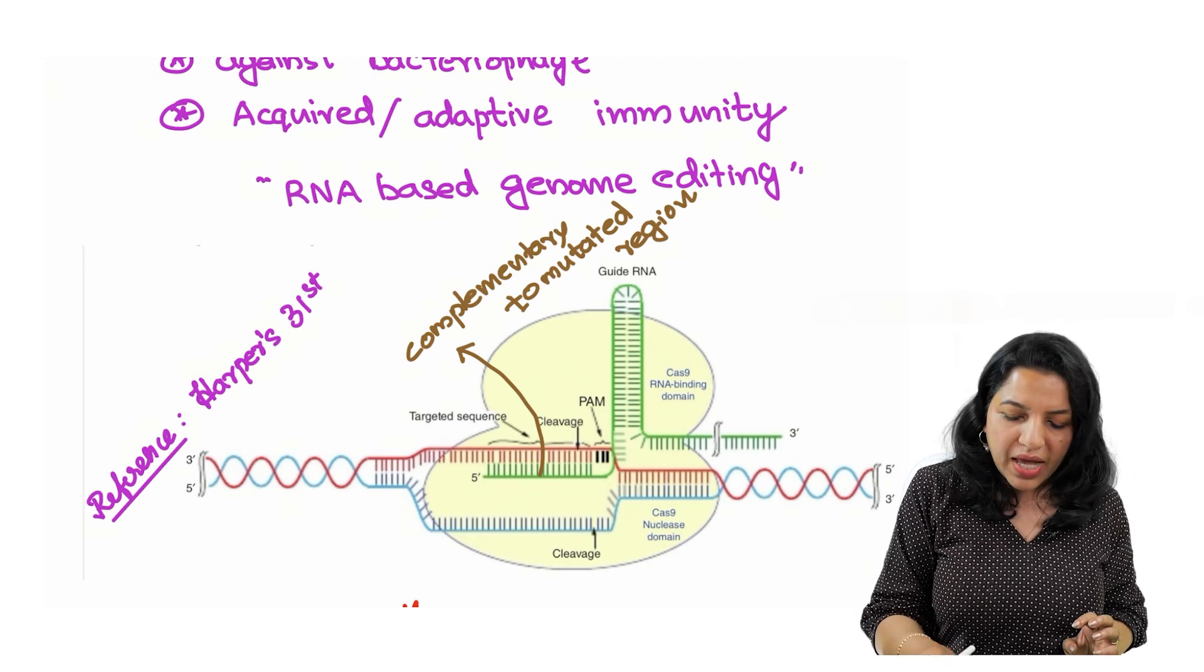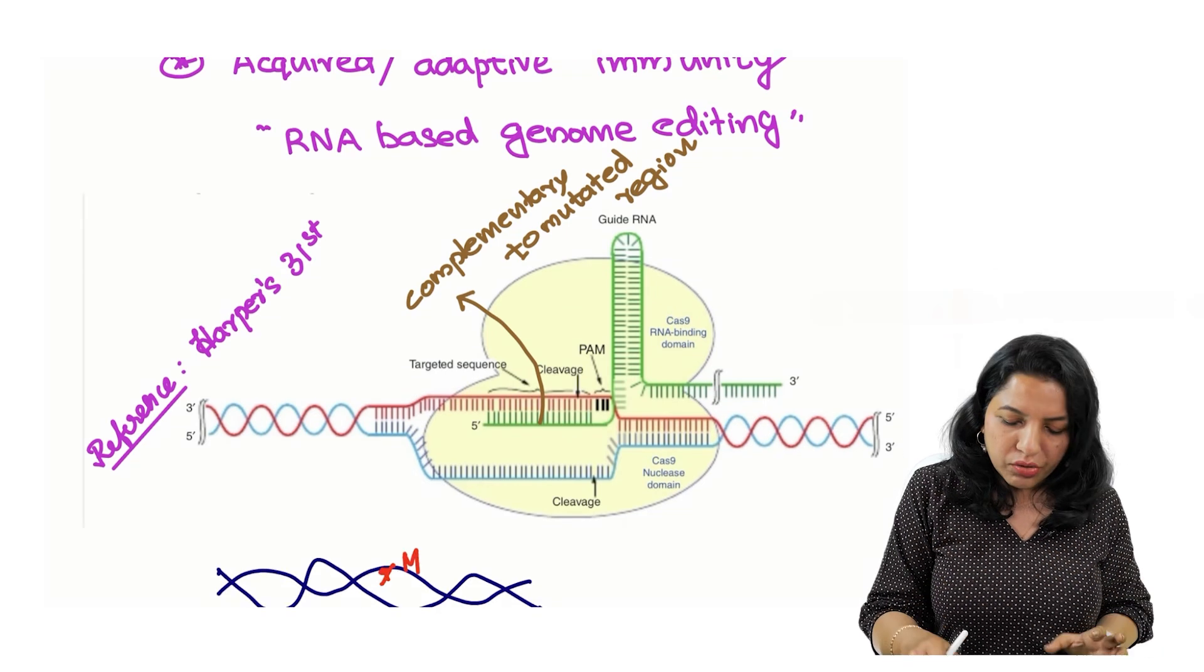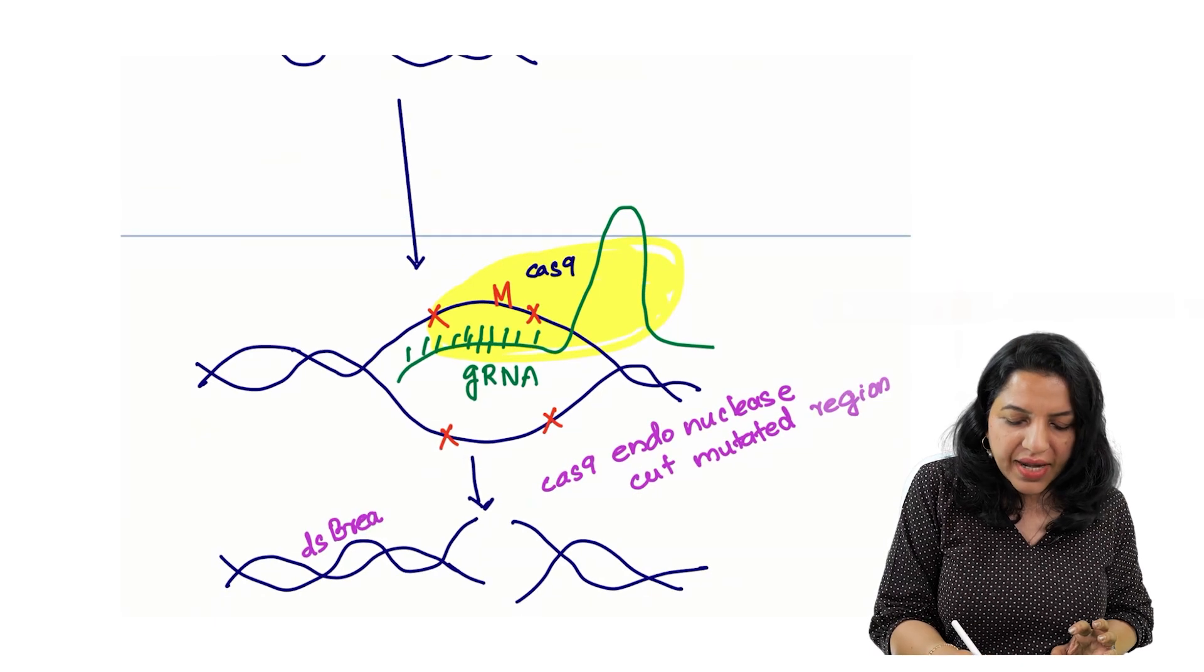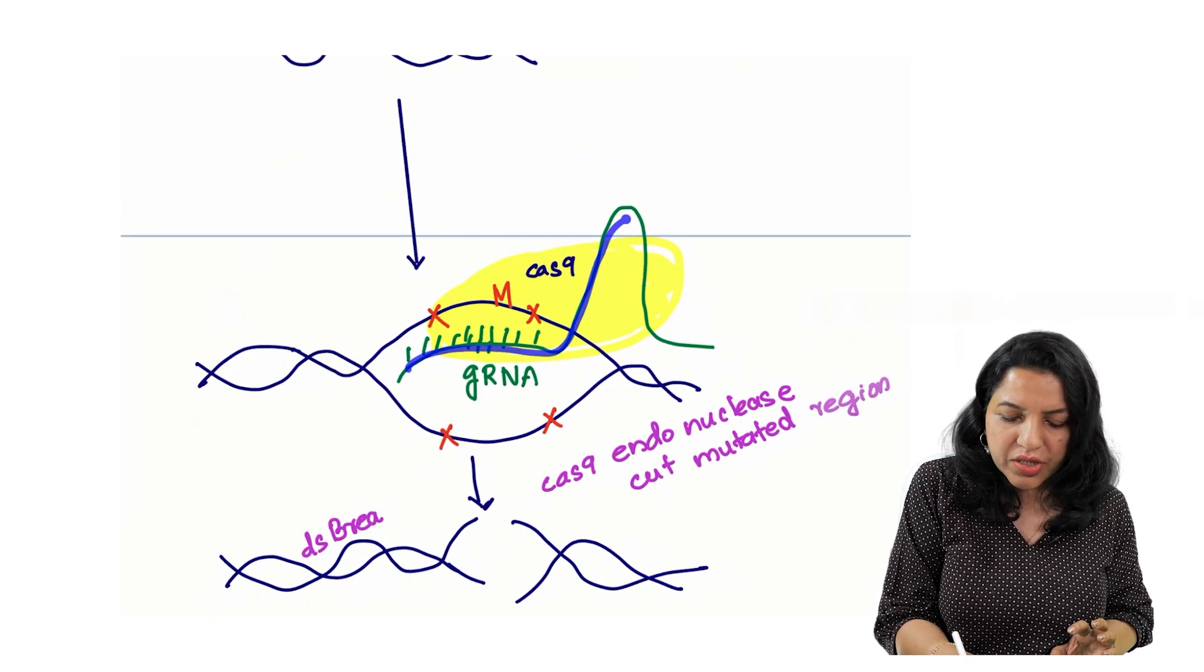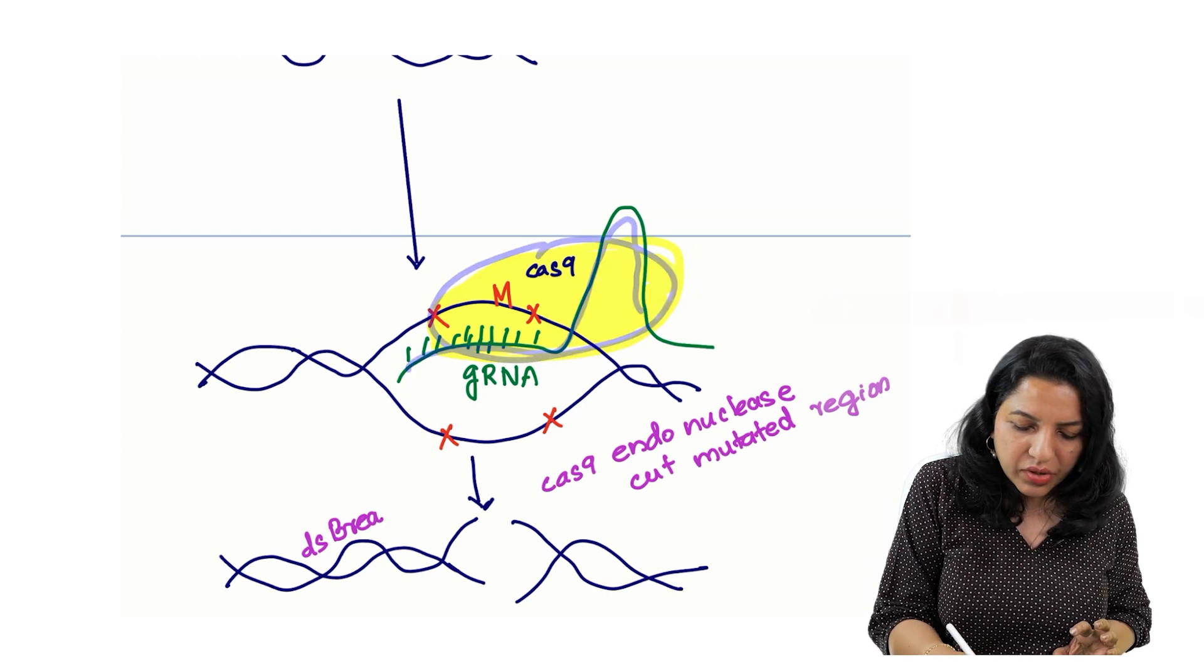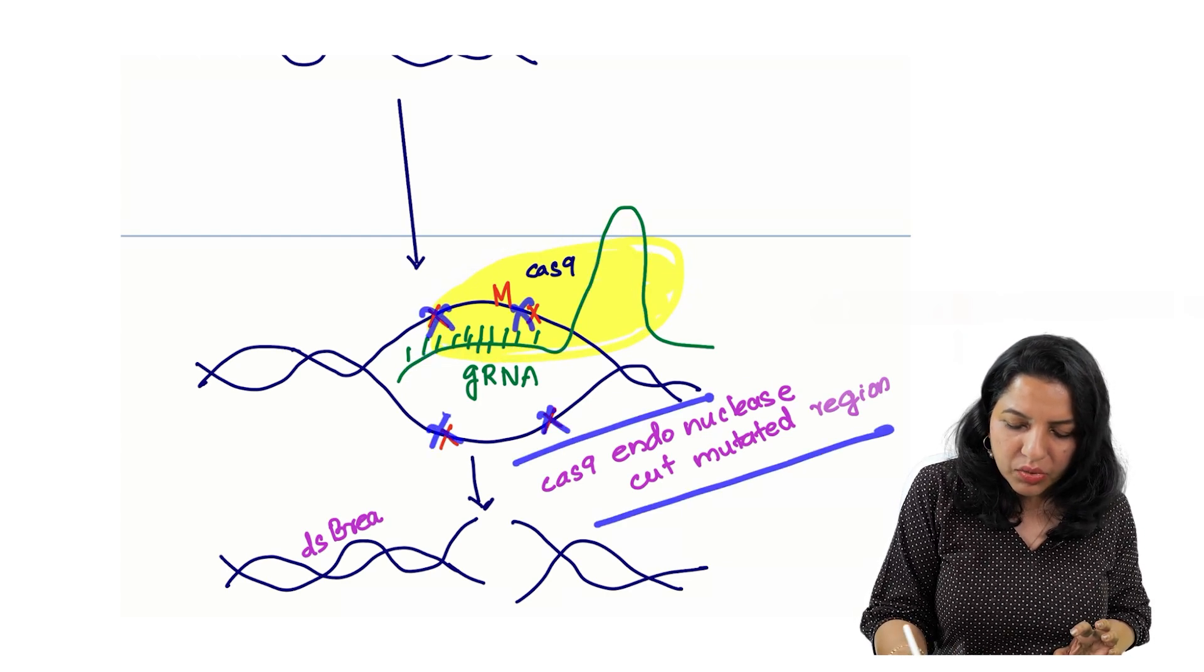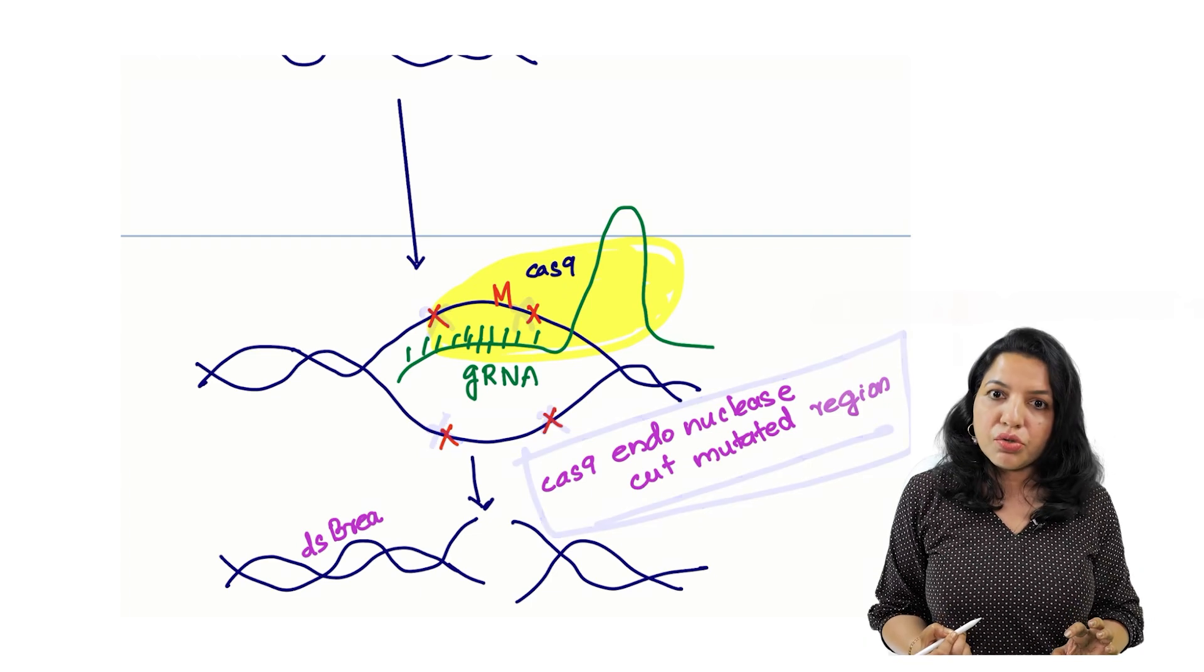So after that, what will happen? This Cas9 endonuclease is doing something here. You can see in this picture, this guide RNA is targeting it towards the mutated region and the Cas9 endonuclease is cutting this DNA at the two strands, cutting the mutated region using endonucleases.